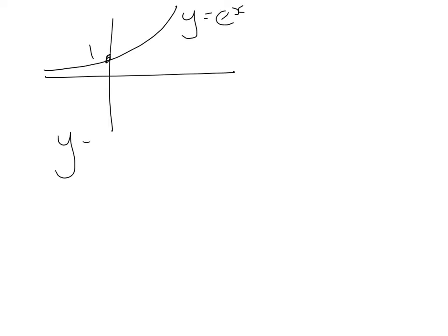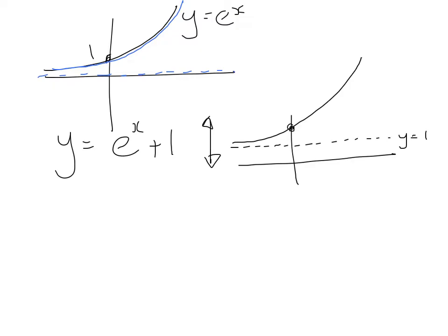Let's try y equals e to the x plus 1. Now, with these outside ones, up and downs, you do need to keep an eye on your asymptote and make sure that travels with the graph, because it is part of the graph. So, everything's going to go up 1. Everything's going to go up 1, including the asymptote. So, this is now at y is 1. The graph went up as well. This is now at 2. It looks like that.